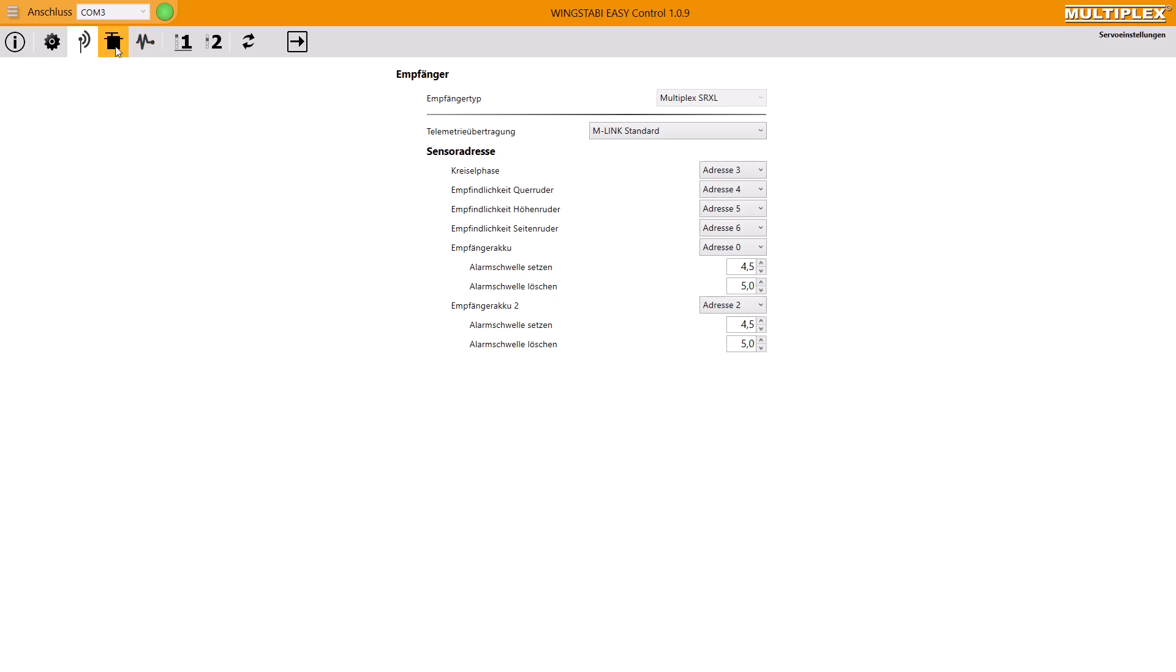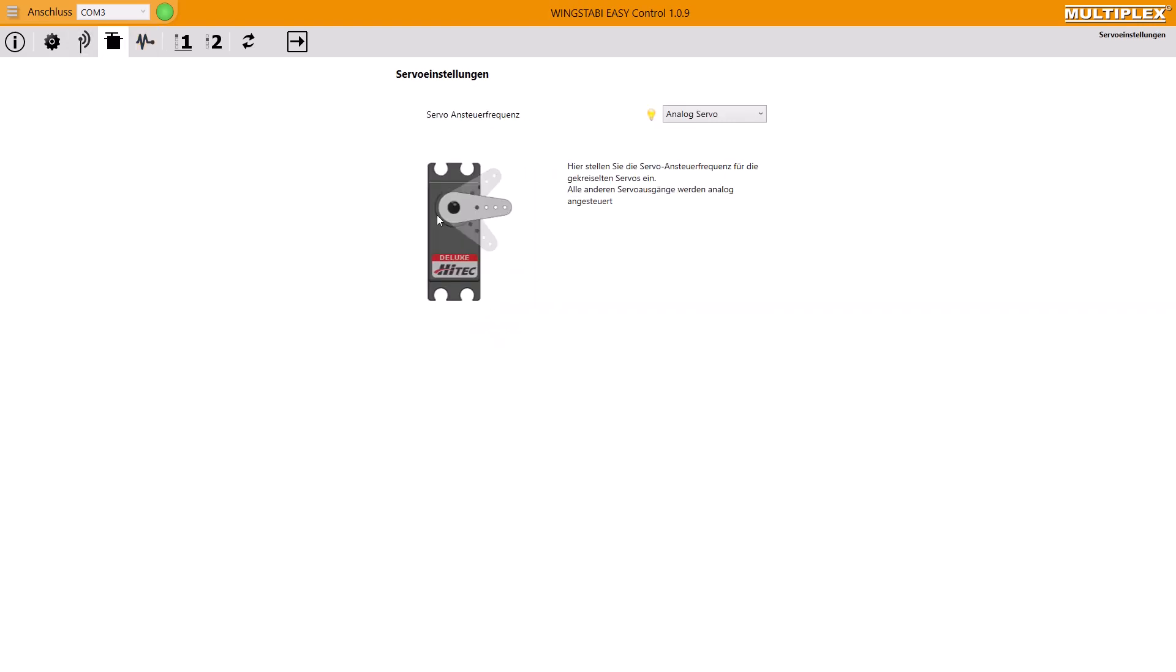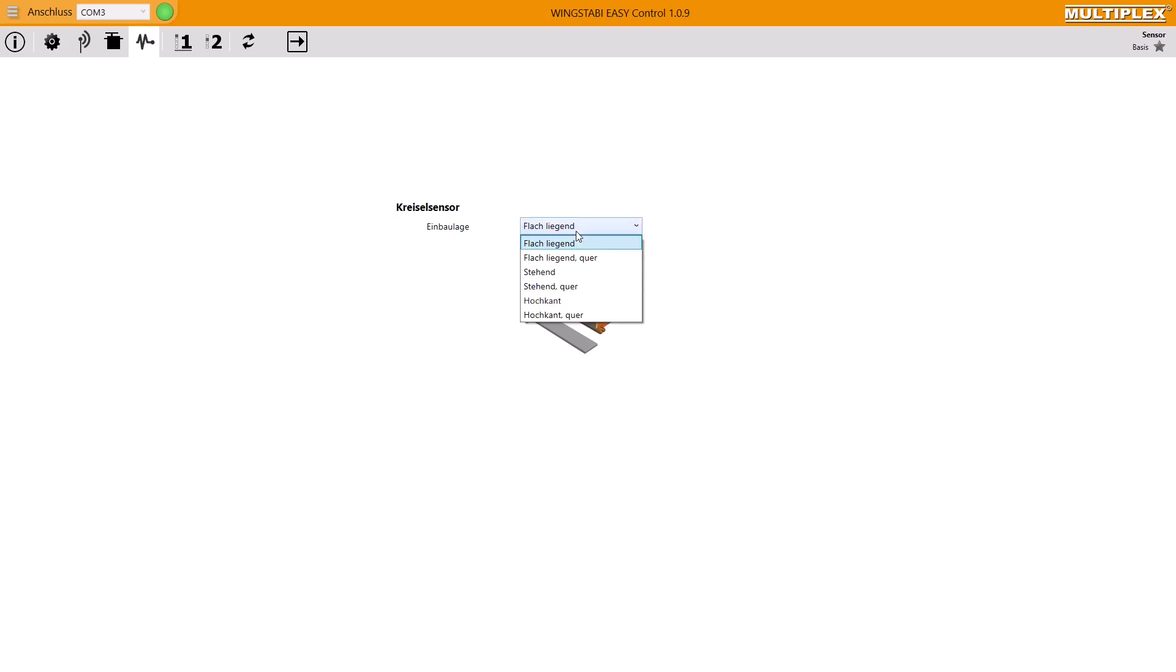Let's go to the servos. Here you can select your right servo frequency. Which frequency is the right one, you should look up in your servo instruction manual. The next function is called sensor. This is a really important function. If your installation position of your Wing Stubby differs from the position in your launcher, you have to switch the selection in your launcher until it fits to the real position in your aircraft.